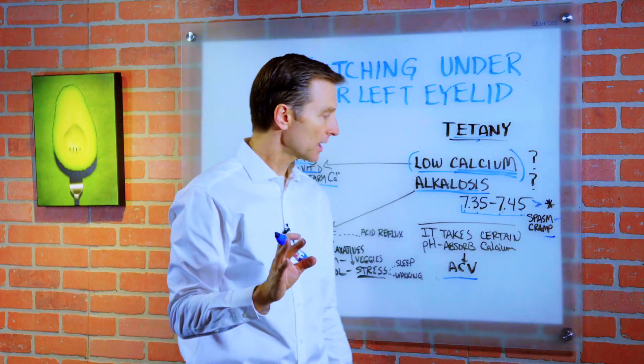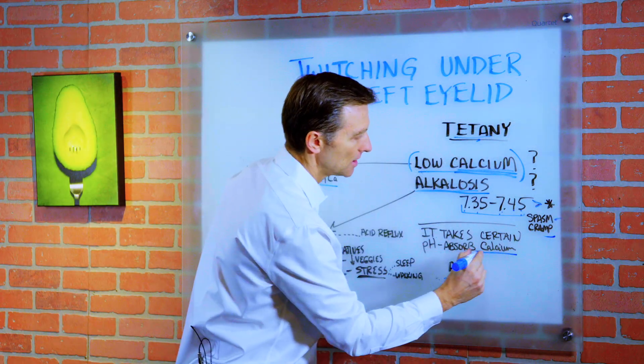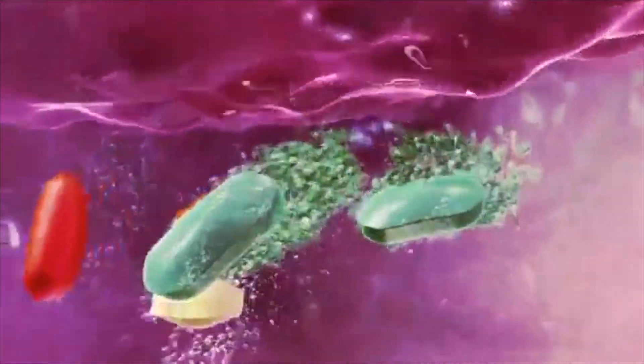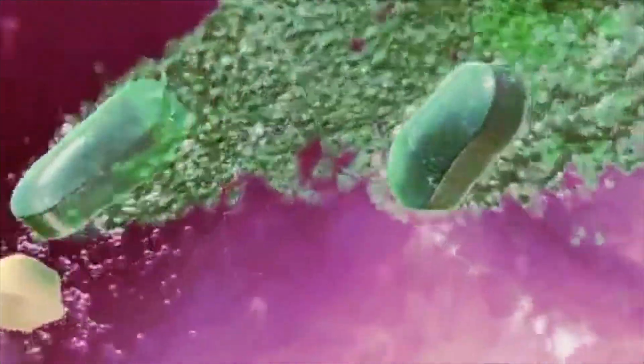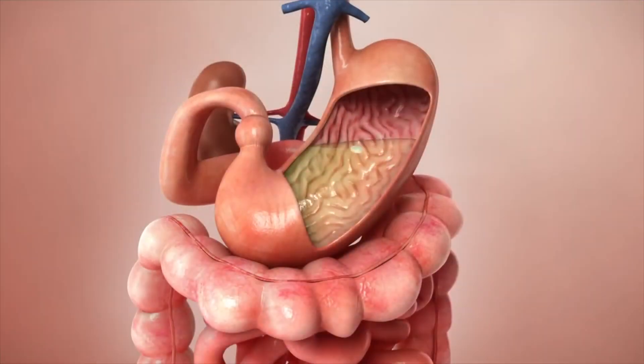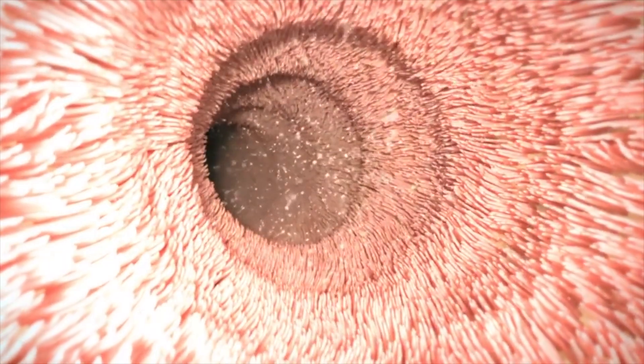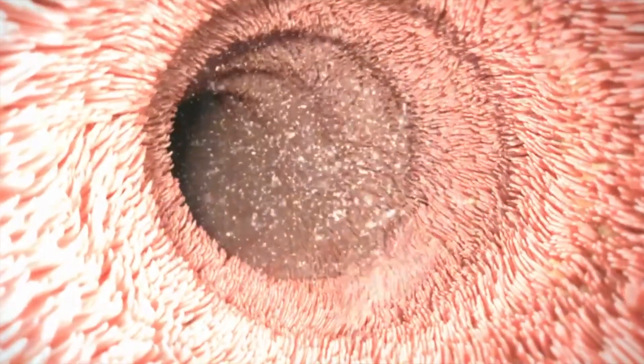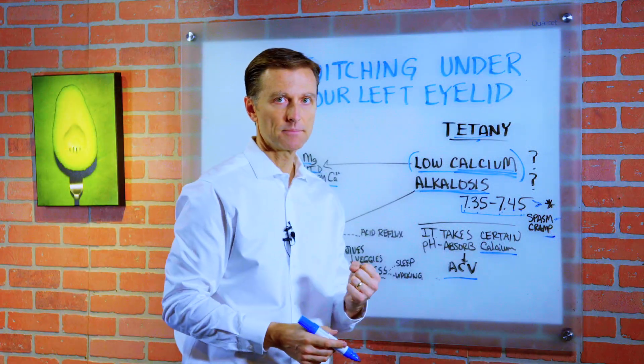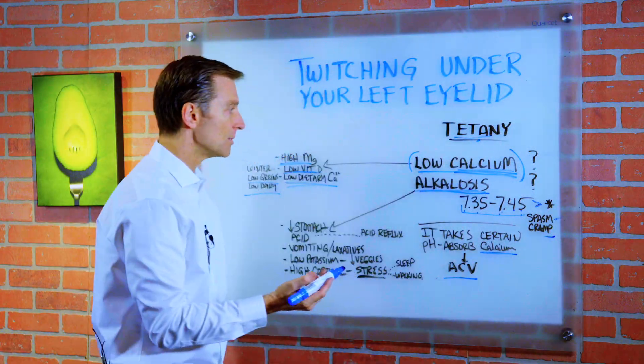And the other point I want to bring up is that calcium is mobilized in the body. It's absorbed in the body with an acid pH in the stomach. So if you don't have enough acid in your stomach, that could be one cause of alkalosis. And that could be one reason why you're not absorbing the calcium. That's actually a very common reason.